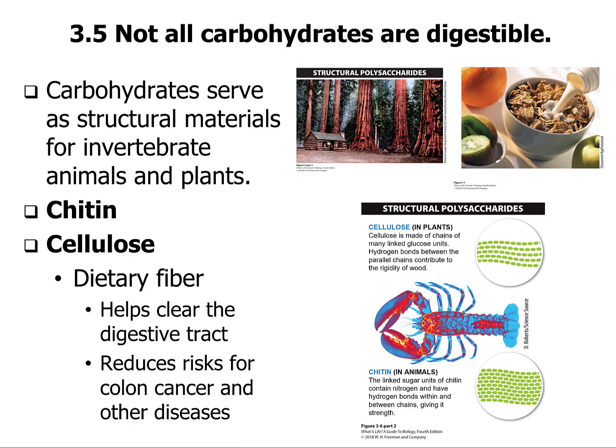Chitin — or 'chitin,' either way is correct, one's more of a Greek pronunciation — and cellulose. Chitin is sort of the heart of a lobster shell; that red shell is made out of chitin and it's really tough. Cellulose is a dietary fiber that helps clear the digestive tract and of course reduces the risk of colon cancer and other diseases.